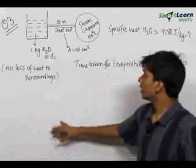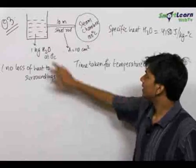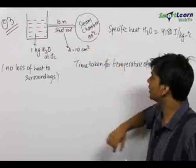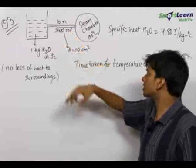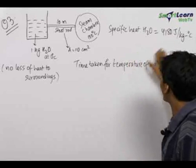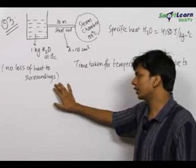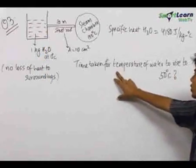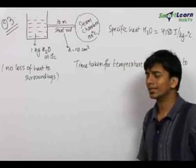Here we have another simple problem. We have a container containing 1 kg of water at 0°C. There is a steel rod joining this chamber to a steam chamber having steam at 100°C. The area of cross section and the length of the steel rod are given. We have also been given the specific heat of water as 4180 J/kg°C. Assume no heat loss to surroundings and the container absorbs no heat. We need to find the time taken for the temperature of water to rise from 0°C to 50°C.